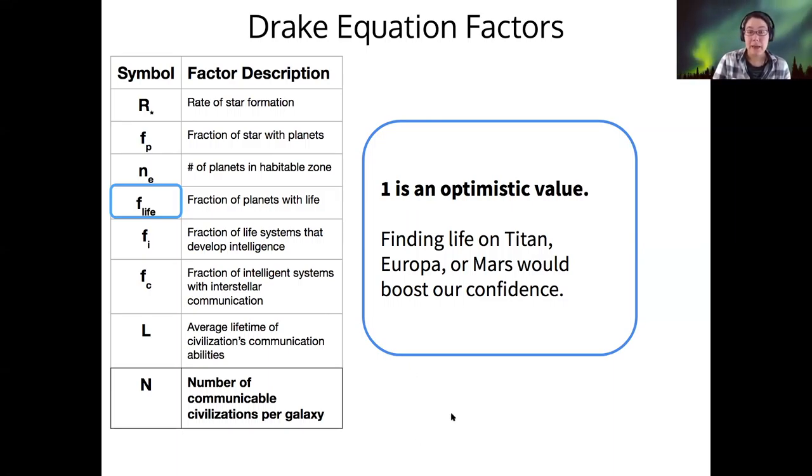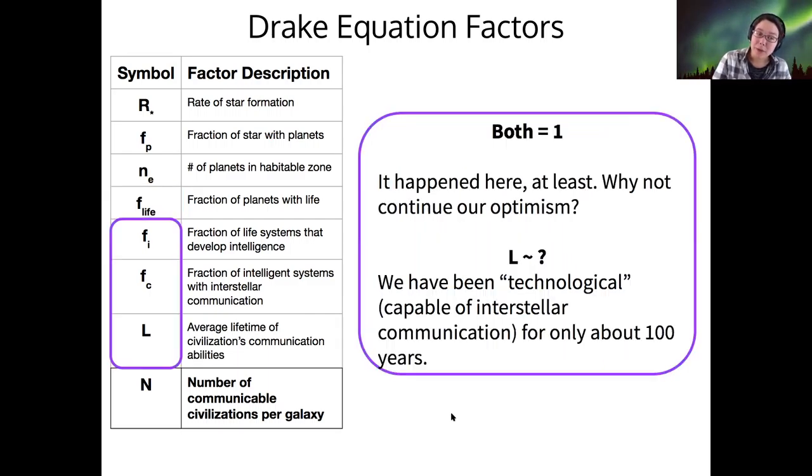So after we have life, we need it to become intelligent before it can become technological. Then we need it to develop interstellar communication. And then finally, that civilization needs to not destroy itself before it can communicate with us. So that's these last three factors here.